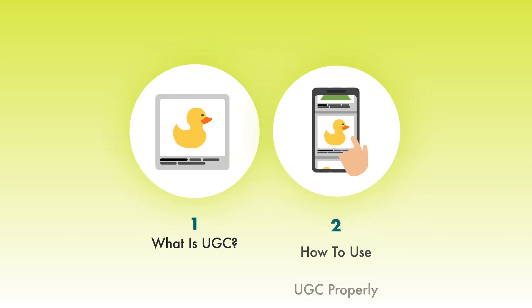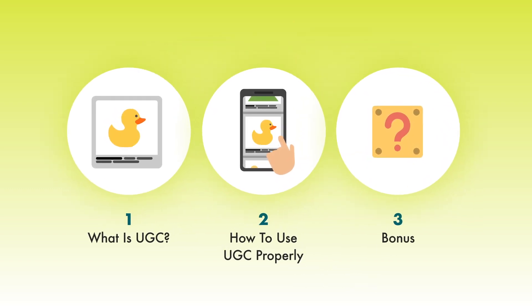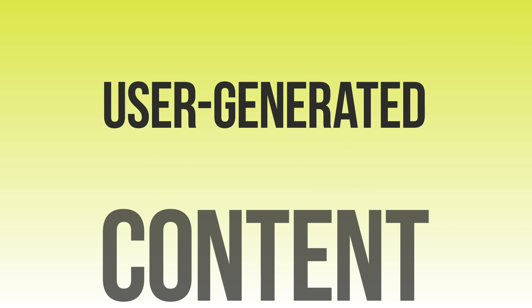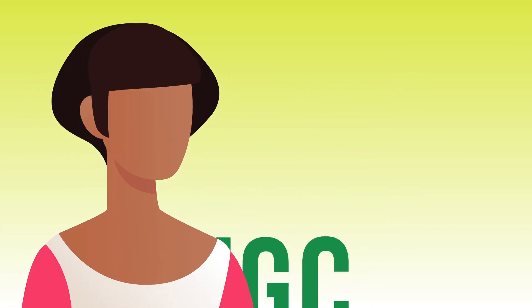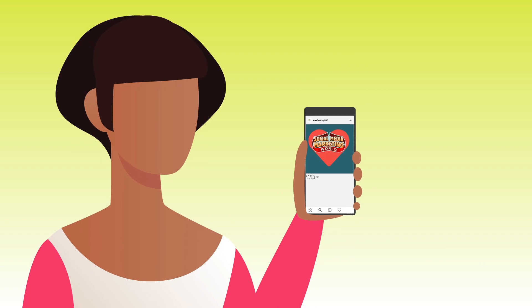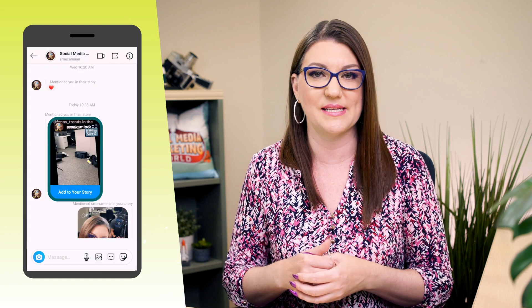Before we dive into how to take advantage of user-generated content, let's quickly break down what exactly it is. User-generated content, also referred to as UGC, is simply content created by other people that is about your product, service, or brand. On Instagram, you may be tagged in, mentioned in, or sent content created by somebody else. It's usually your customers creating the content, but it could be potential customers or your audience in general.